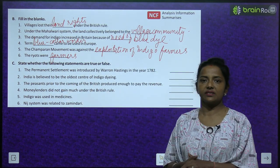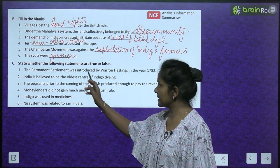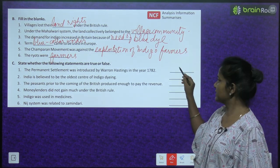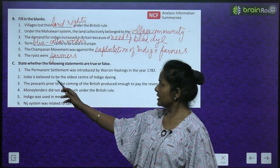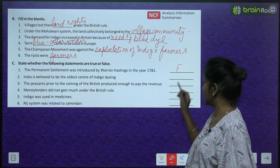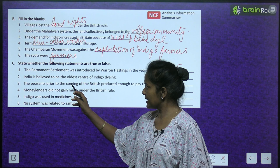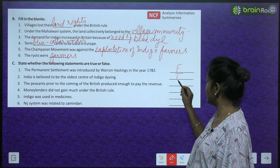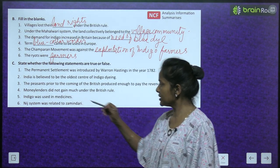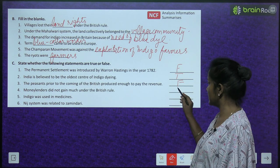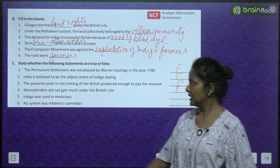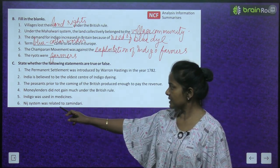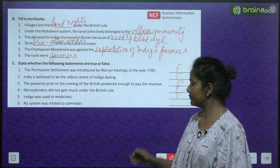True or false: The Permanent Settlement was introduced by Warren Hastings in 1782 — False. India is believed to be the oldest centre of indigo dyeing — True. The peasants prior to the British produced enough to pay the revenue — False. Money lenders did not gain much under British rule — False, they gained a lot. Indigo was used in medicines — True. The Niche system was related to zamindari — False.